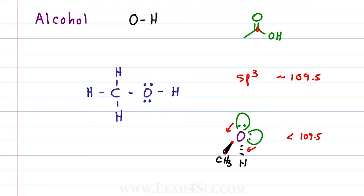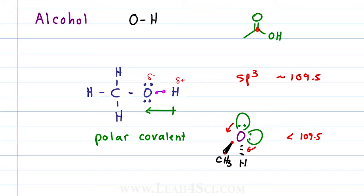Oxygen is a highly electronegative atom, and when bound to hydrogen, which is less electronegative, you're going to have an unequal sharing of electrons in that covalent bond, making it a polar covalent bond where the hydrogen has the positive end and oxygen the negative. You can represent this with a delta negative at the oxygen and delta positive at the hydrogen. This will be very important when we look at things like hydrogen bonding, solubility, and boiling point in the physical properties video.